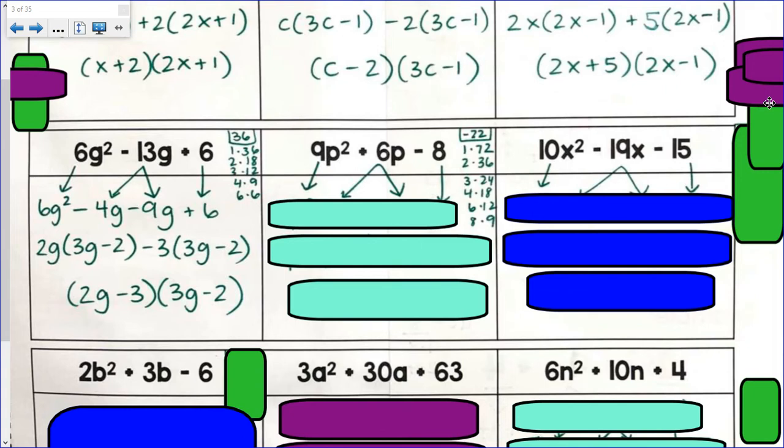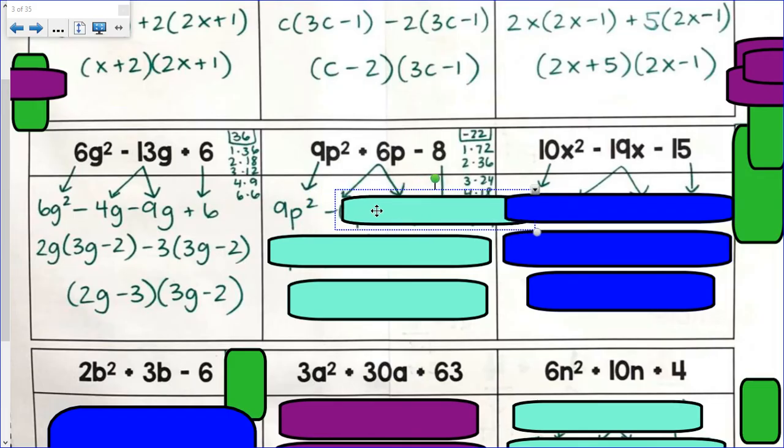Do you see which factor pair would get me that answer? If you said 6 and 12, you are correct. 9p² minus 6p plus 12p minus 8. Okay.